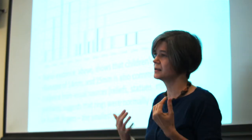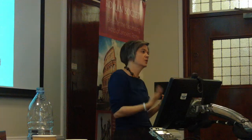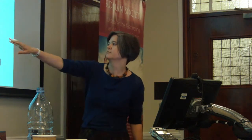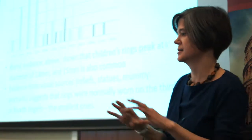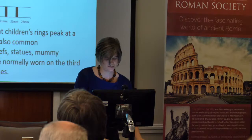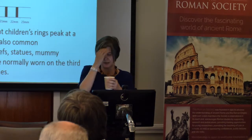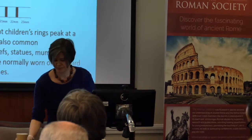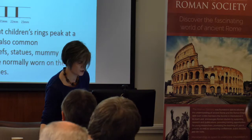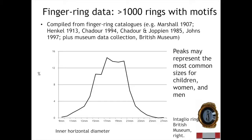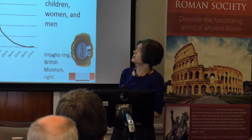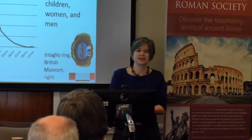We also need to think about which finger the ring is worn on, as that affects size. To tackle that question I looked at a lot of evidence from visual sources — sculptural reliefs, statues, and mummy portraits — and was able to establish that rings are normally worn on the smaller fingers. So if we've got an idea of which ring diameters belong to which life course stages, we can start to see how that is reflected in the data gathered.